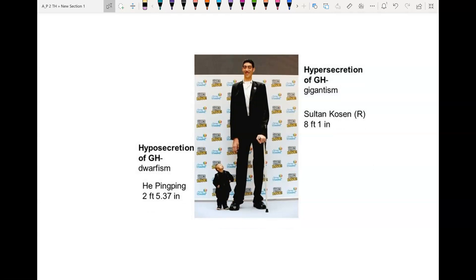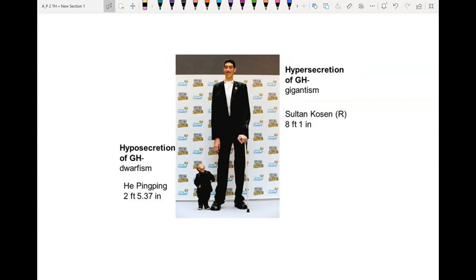There are other factors too that can cause extremes in the amount of growth hormone. Here you can see we have hyposecretion of growth hormone results in dwarfism, and here is the current shortest person in the world, two feet 5.37 inches. Or you can have hypersecretion of growth hormone, where your pituitary gland secretes way too much, and that results in gigantism. Here is the current tallest person in the world at eight foot one inch. So these are both conditions in which you have extremes in the amount of growth hormone.